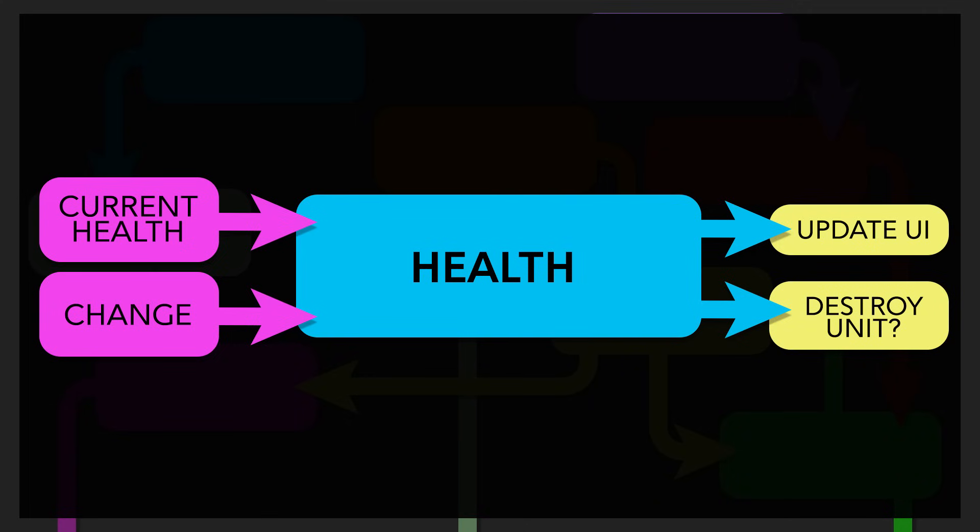A health system usually takes in an input of some sort of change to a health variable, whether that's an integer or a float, and this could be increasing or decreasing the character's health, and ultimately this leads to an output of updating a health UI, whether that's in the player's HUD or perhaps a bar over a particular enemy, and potentially ending either the game or killing off a unit if that health gets below zero.